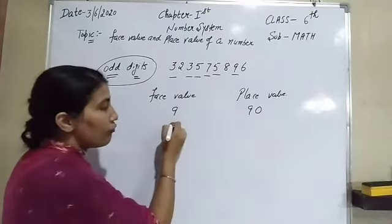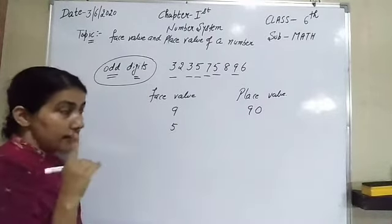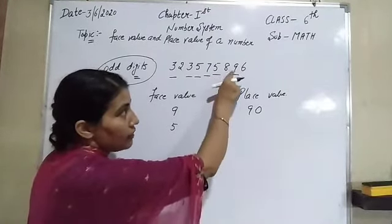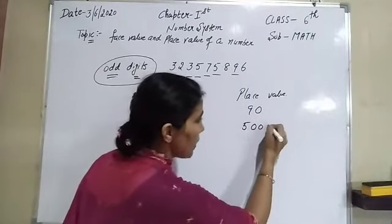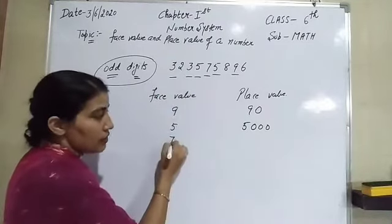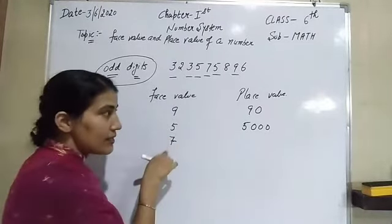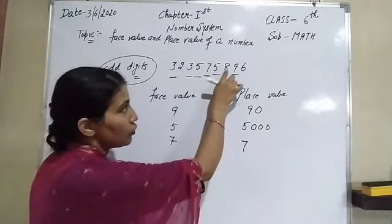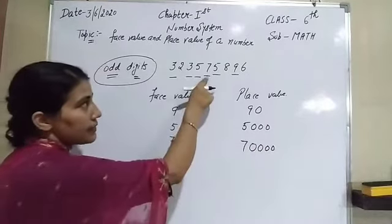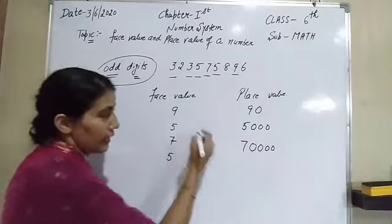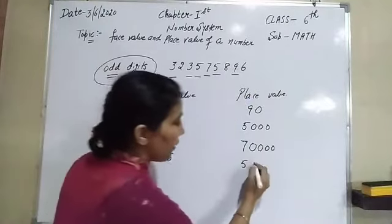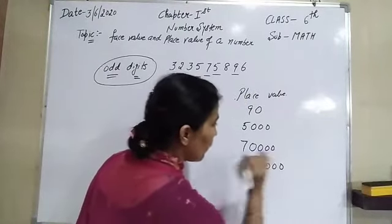Seven is odd. Face value is 7. Count digits after seven: one, two, three, four — write four zeros, giving place value 70,000. Then five again: face value 5, count digits after it: one, two, three, four, five — write five zeros, giving place value 500,000.